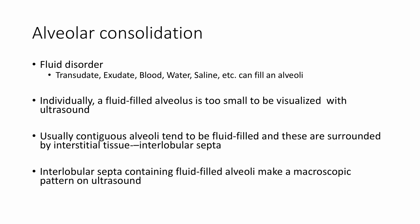In the case of an alveoli that is fluid filled, individual alveoli are too small to be visualized by ultrasound. However, contiguous alveoli tend to be filled at the same time, and each of these groups of contiguous alveoli are encased by interstitial tissue known as the interlobular septa. And together, the interlobular septa and the fluid-filled alveoli contained within those septa produce a macroscopic image on ultrasound.